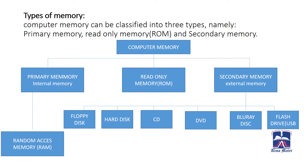Computer memory can be classified into three types: primary memory, read only memory known as ROM, and secondary memory. Primary memory is further divided into random access memory, RAM. Secondary memory is categorized into floppy disk, hard disk, CD, DVD, Blu-ray disk and flash drives.